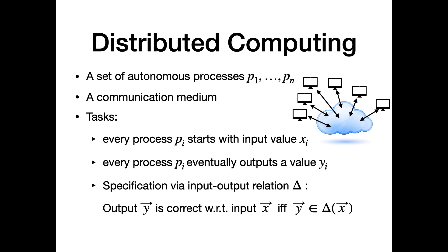There are of course some input-output relations specifying the task. So an output vector Y is correct with respect to some input vector X if and only if the vector Y satisfies the specification of the task with respect to the input vector X. Instead of talking about vectors, it is much more convenient to talk about simplices and complexes.